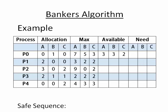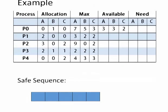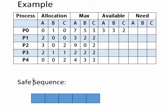In the given example of the Banker's Algorithm, there are five processes, namely P0 to P4. The allocation matrix and the maximum matrix are given, and there are three resources of type A, B, and C available, namely 3, 3, and 2.